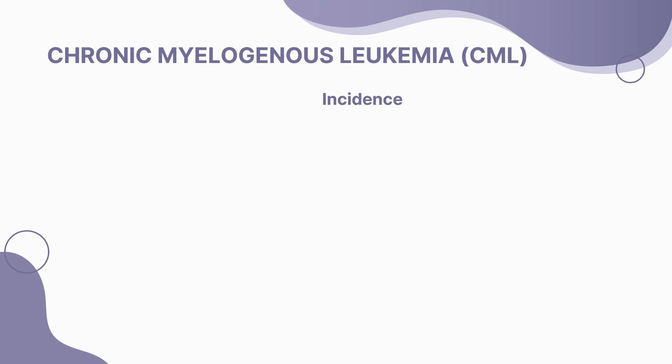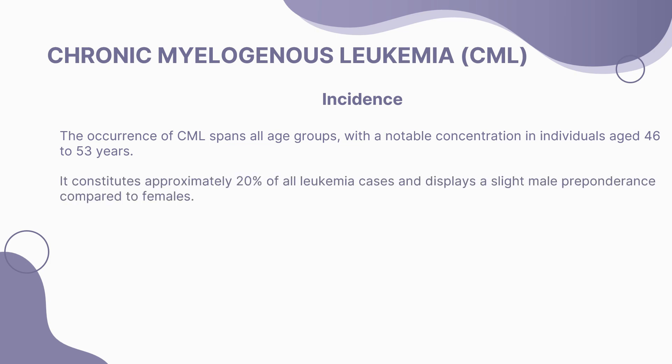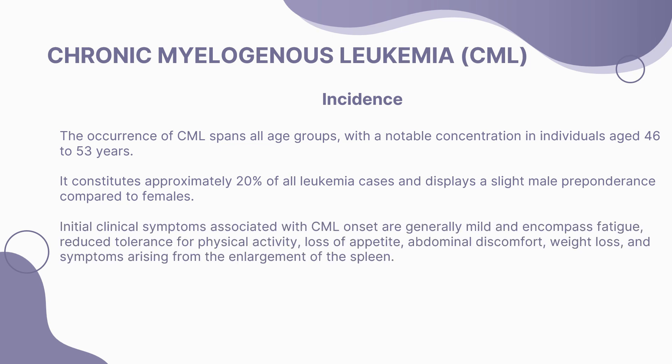CML can occur across all age groups, with a notable concentration in individuals aged 46 to 53 years. It constitutes around 20% of all leukemia cases, with a slight male preponderance. Initial clinical symptoms are generally mild and encompass fatigue, reduced physical activity tolerance, loss of appetite, abdominal discomfort, weight loss, and symptoms arising from spleen enlargement.